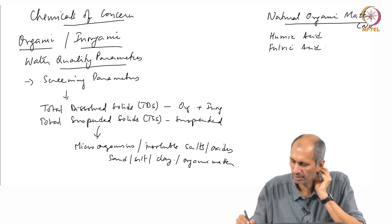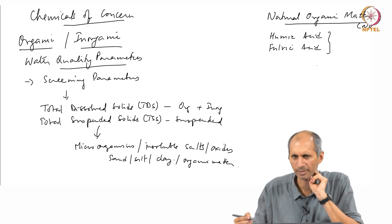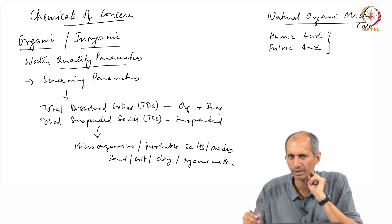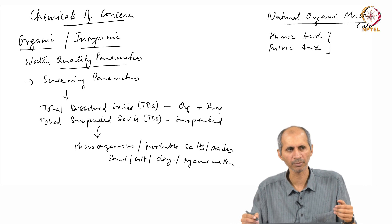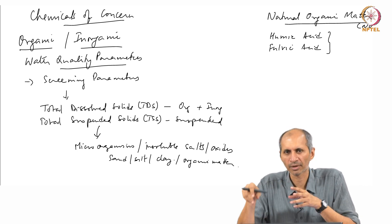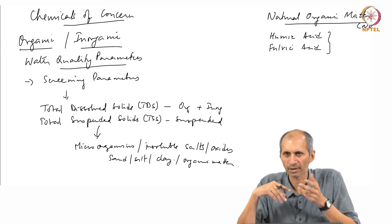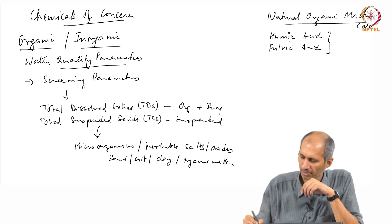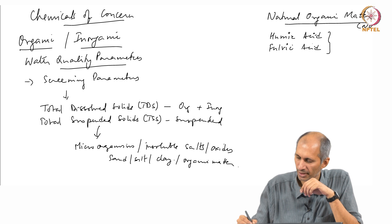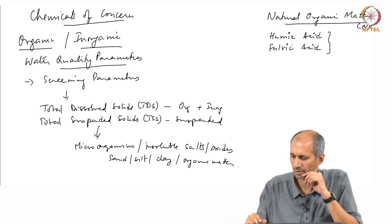These are two commonly used organic carbon substitutes — they are present as part of organic matter. But suppose I want to test the effect of organic carbon on something; I need a model compound to give us some idea when we want to study the effect of organic carbon. Organic carbon and organic matter are very important, and we will discuss that shortly.